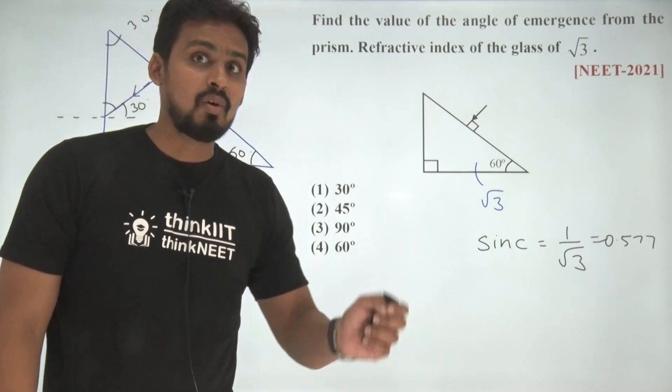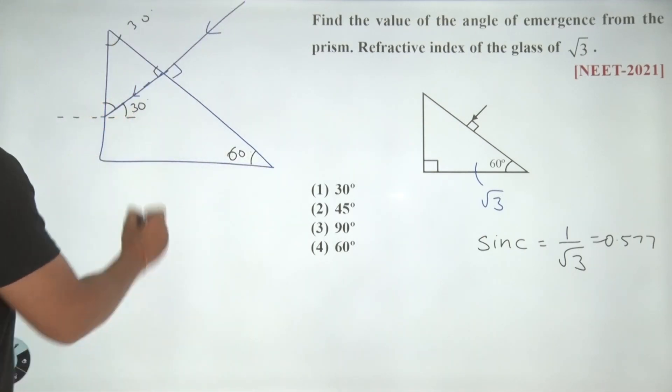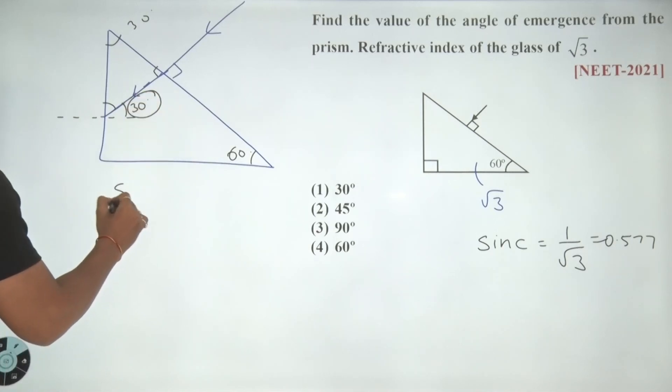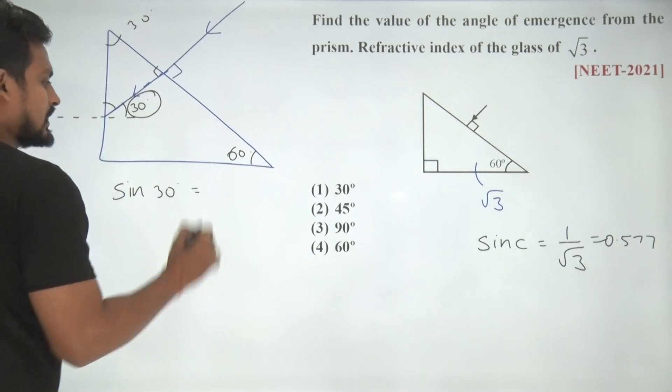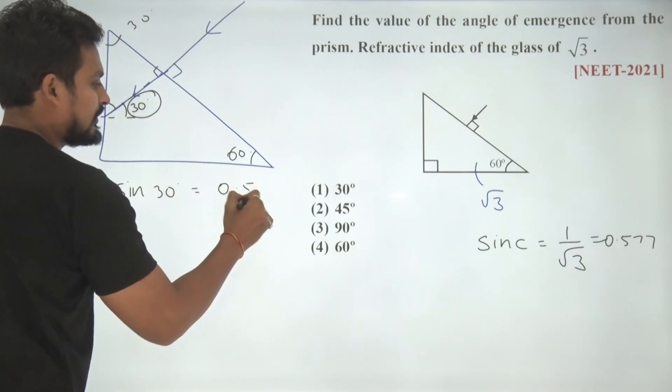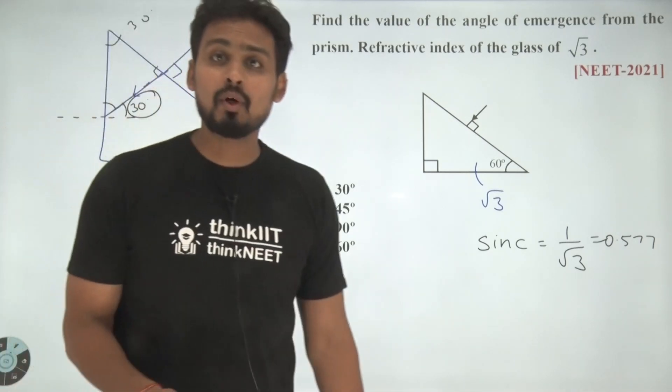And this would come around 0.577. Now, when I talk about this value 30 degree, can I say sin of 30 degree is 0.5?